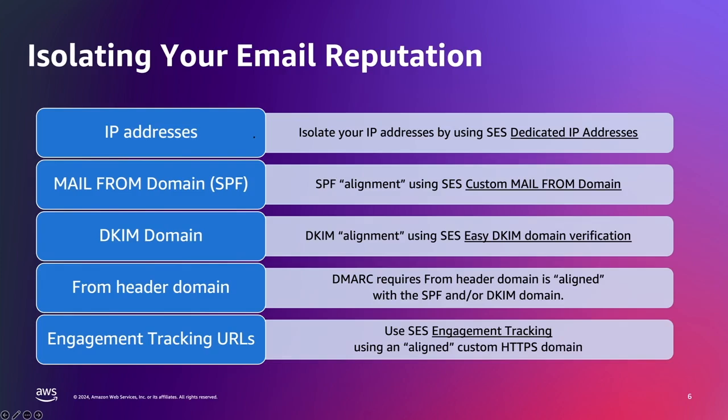To ensure your reputation is properly associated with your messages, you need to authenticate each of the key indicators that mailbox providers use to assess senders. This includes using dedicated IP addresses, implementing SPF for your mail from domain, signing messages with DKIM using verified domains, aligning your from header domain to your DKIM and SPF, and ensuring that other URLs in your messages are aligned with your DKIM domain if possible. While dedicated IPs can help, the priority should be on getting your domain-based authentication in order, as that is ultimately more important for building a positive, consistent reputation.